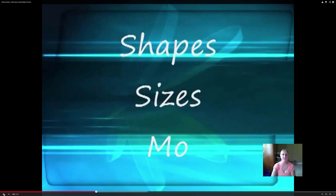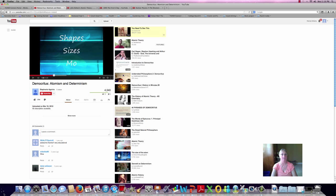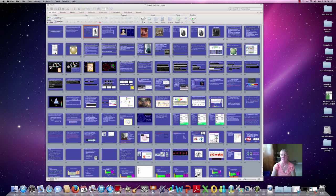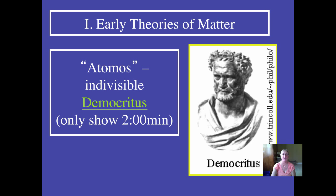That's a good place to stop the video. So we're back to our PowerPoint. The idea is that the atom, according to the Democritus model, consisted of the atom itself and everything else, which was the void. And that basically is the theory of Democritus.